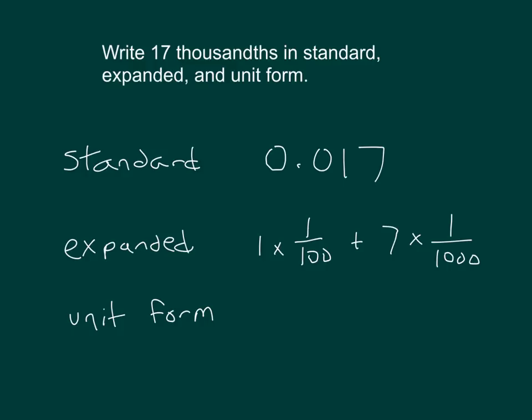In unit form, we can write it out with its units. There's one hundredth, and there's 7 thousandths. We also could have written it as 17 thousandths.